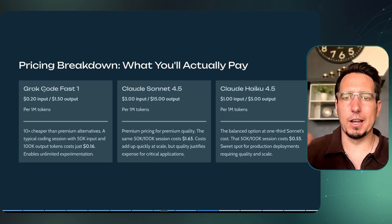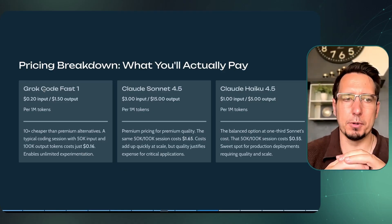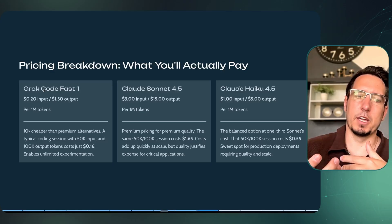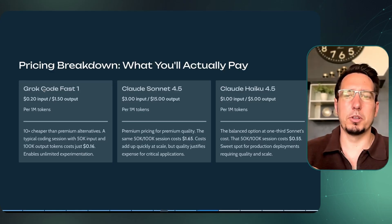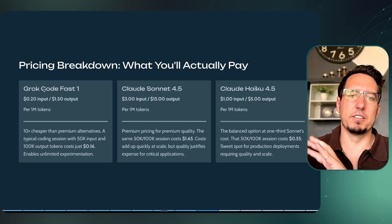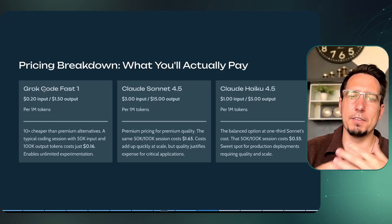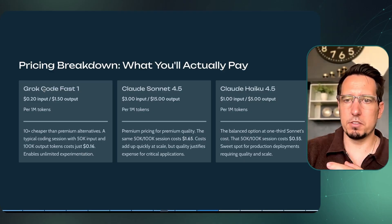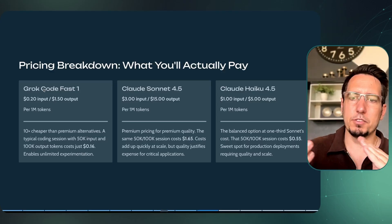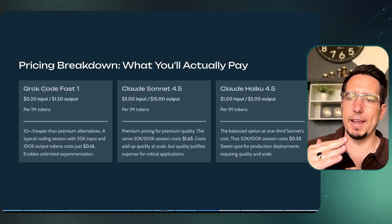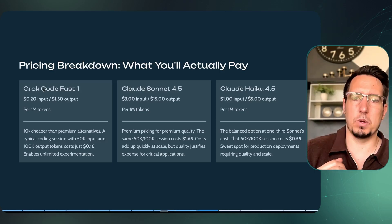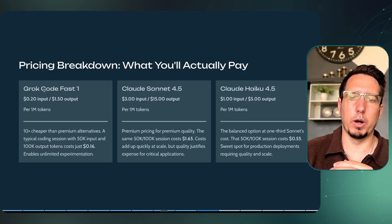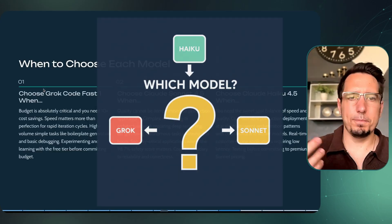So to summarize the comparison: Grok dominates on speed and cost but trails on quality and consistency. Sonnet 4.5 leads on all quality metrics at premium pricing. Haiku 4.5 offers the most balanced profile across all dimensions. Breaking down what you actually pay — Grok Code Fast is 10 times cheaper, great for quick experiments. Sonnet 4.5 is the premium model where quality justifies the price. Haiku 4.5 is cheaper than Sonnet 4.5, more consistent, but doesn't perform as well — making it a sweet spot for production deployments requiring quality at scale.